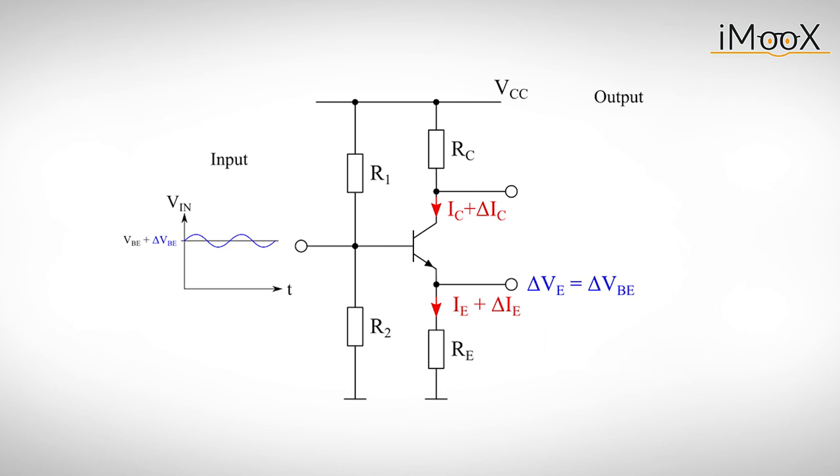The changing emitter current, delta IE, causes nearly the same change in collector current, delta IC, and therefore a changing voltage at the resistor RC, which leads to a changing output voltage, delta VC. And there we have it, a voltage amplifier.